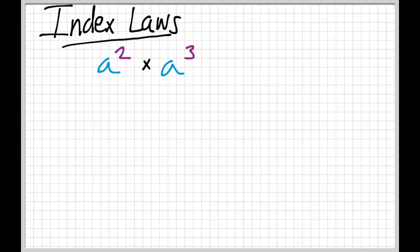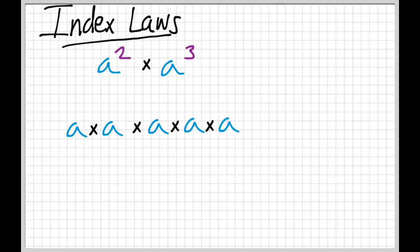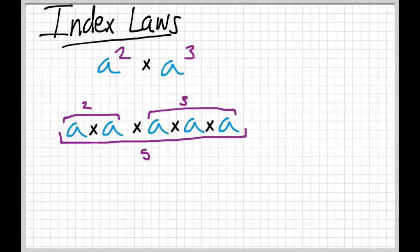Now, what this really is: if we have a squared, well that's a times a. And if we have a cubed and we're multiplying by a cubed, so we're multiplying by a times a times a.